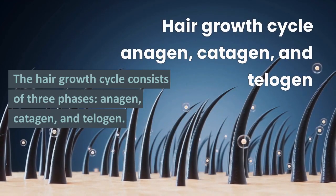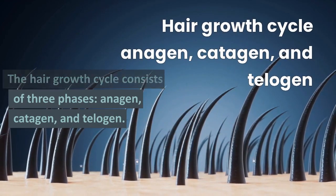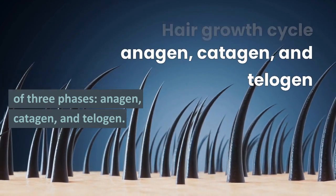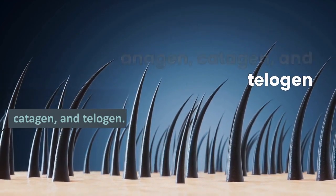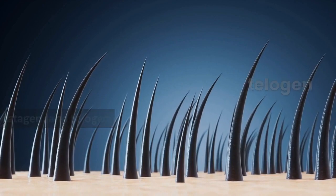The hair growth cycle consists of three phases: anagen, catagen, and telogen.